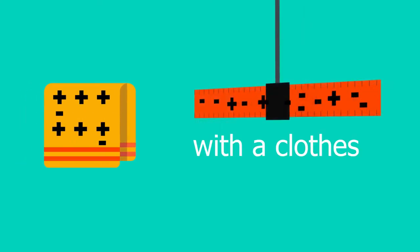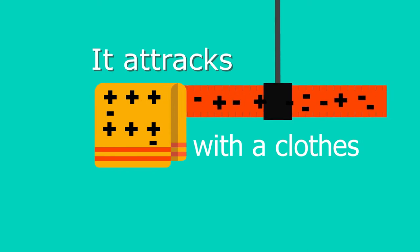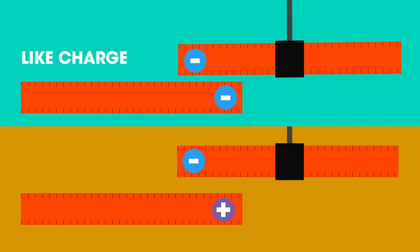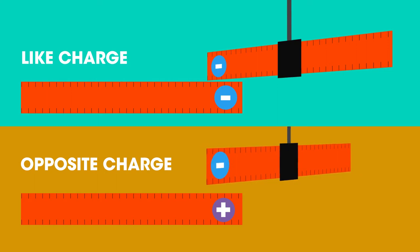Holding the cloth used for charging near to the ruler will attract it toward the cloth. This shows that there are two types of charge, positive and negative. So alike charges repel or push each other away, whereas opposite charges attract each other or move towards each other.